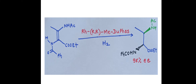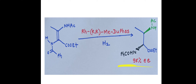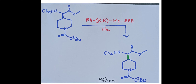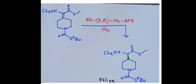In the third example, at the beta-carbon atom, two different substituents are present. In the presence of the chiral catalyst rhodium-RR-methyl-DUPHOS, it undergoes hydrogenation to give two different chiral centers or stereogenic centers, with 96% enantiomeric excess. In the fourth example, the carbon-carbon double bond undergoes hydrogenation with rhodium-RR-methyl-BPE acting as the catalyst, and the product is obtained in 94% enantiomeric excess.